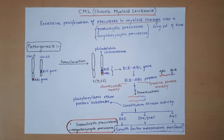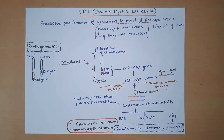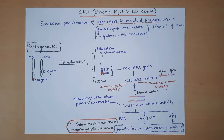The topic we will be discussing in this video is chronic myeloid leukemia, or CML. We have already discussed many topics of myeloid and lymphoid neoplasms; this is another topic of myeloid neoplasm. We will be covering this video under the following subheadings: introduction to CML, pathogenesis of CML, morphology of CML, and the clinical features seen in patients of CML.